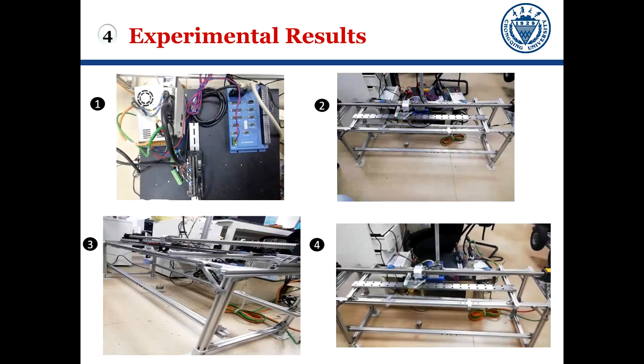Therefore, we can draw the conclusion that undesirable load swing is mitigated, and the tracking errors of the under-actuated crane systems converge to a region asymptotically by using the novel non-recursive control scheme.